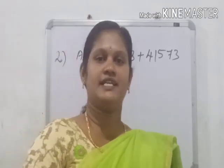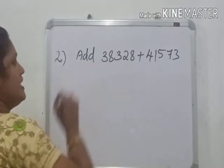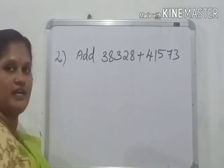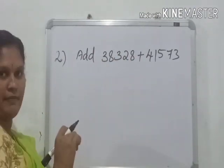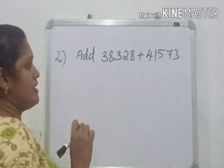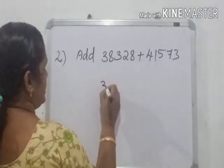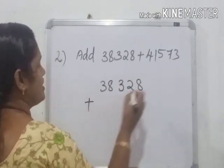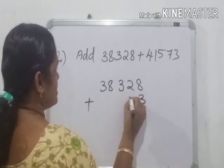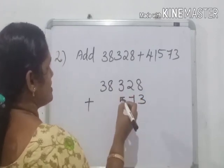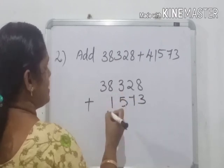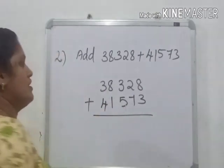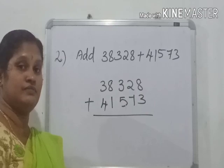Again we have another example. Add 38,328 plus 41,573. To add these two numbers, we will place one number below the other. 38,328 plus, here units place digit 3, tens place 7, hundreds place digit 5, thousands place 1, tens thousands place 4. So we start the addition from units place.